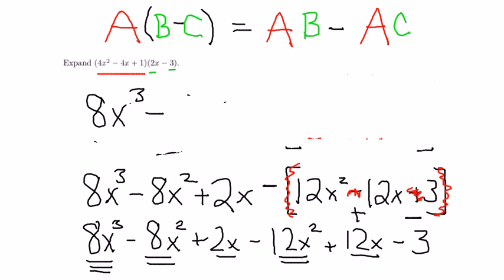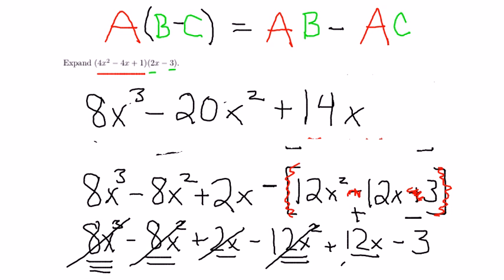Minus 8x squared and minus 12x squared combined to make minus 20x squared. 2x and 12x combined to make 14x. And finally, minus 3 is minus 3.